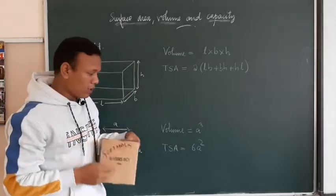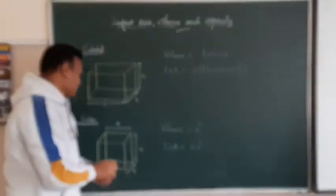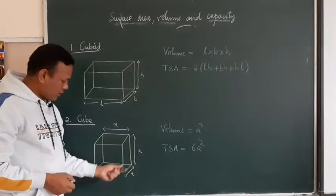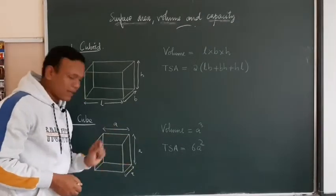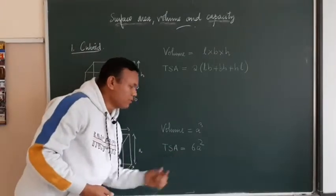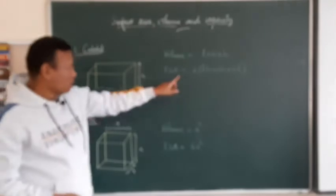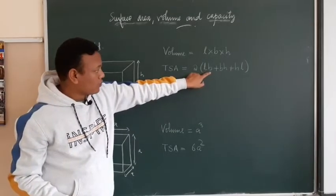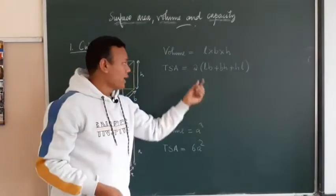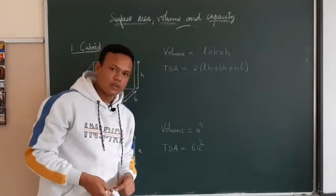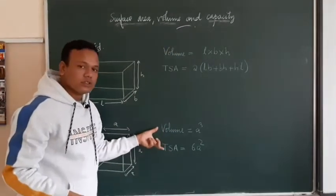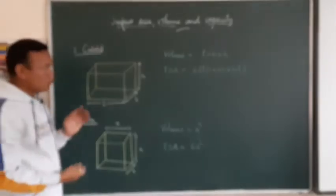In a cube, all the edges are equal, so the volume formula becomes A³. This is because length × breadth × height = A × A × A = A³. Similarly, the total surface area will be 6A². To get 6A²: each face has area A × A = A², and A² + A² + A² = 3A², then 3A² × 2 = 6A². You may pause the video to note down the formulas.